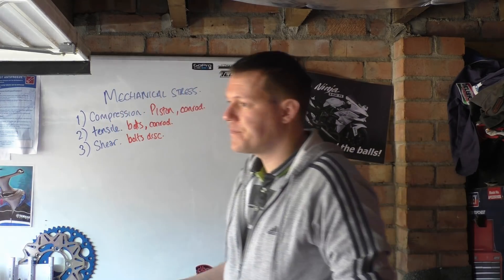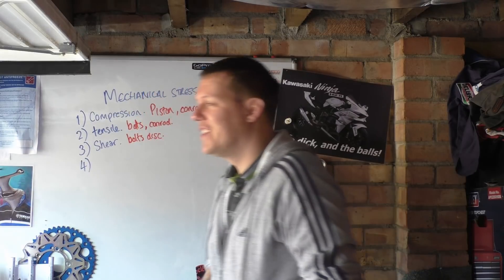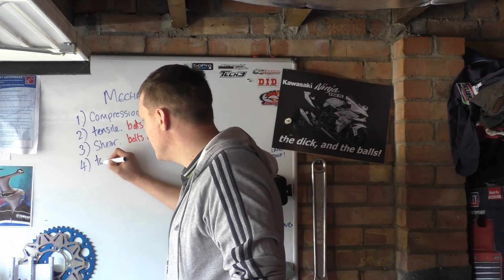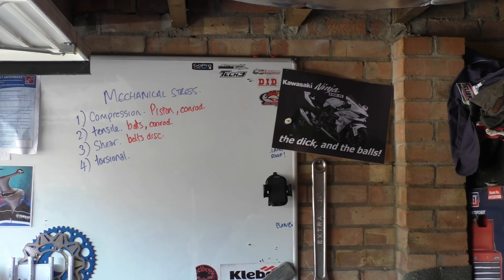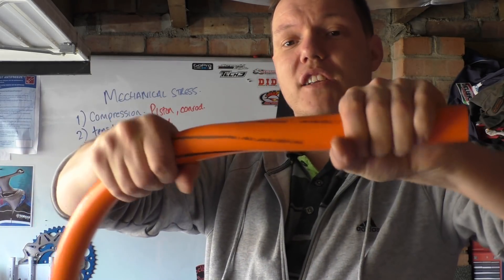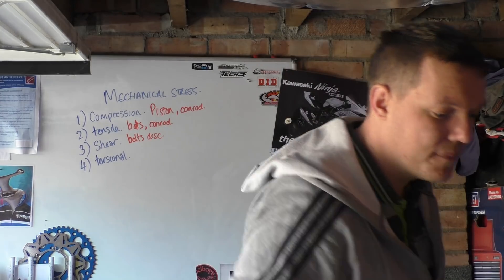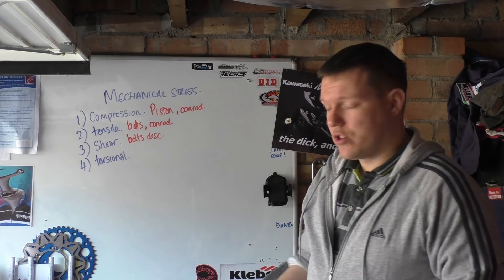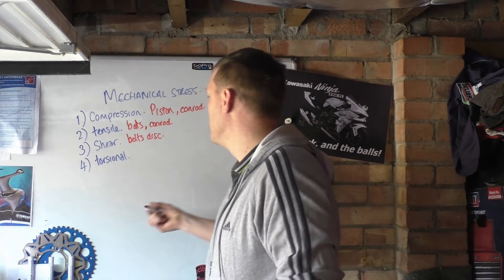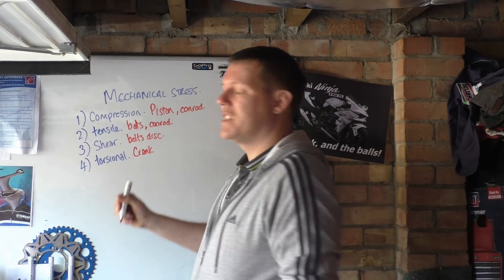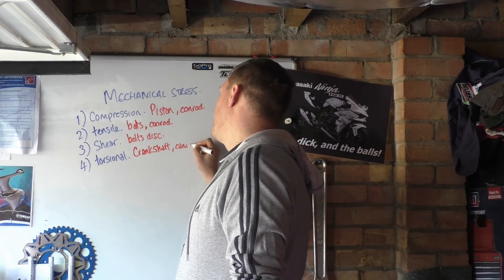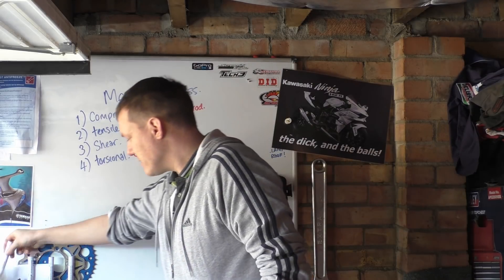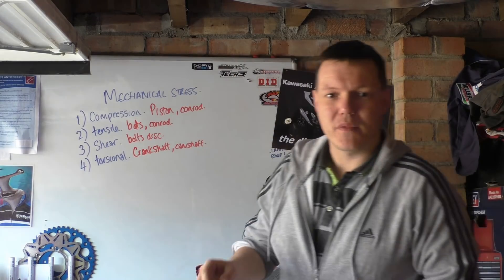Number four is torsional stress. Torsional stress is this twisting action — it's applying torque to something. Your crankshaft is the main example; your crankshaft has to withstand torsional stresses. Your camshaft as well. Basically just anything that twists — your sprocket, anything.